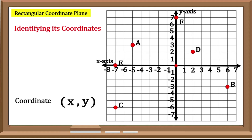For Point A, create a vertical line along the X-Axis from the given point, which is negative 5, and a horizontal line along the Y-Axis from the given point, which is negative 3. So therefore, the coordinates of Point A are negative 5, negative 3.